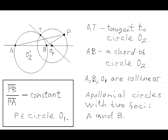In this case, if we draw a straight line through center O1 that intersects the second circle at points A and B, then circle O1 is called Apollonial to circle O2 with two focal points A and B.